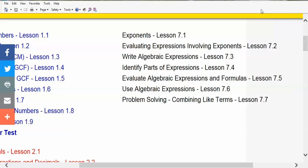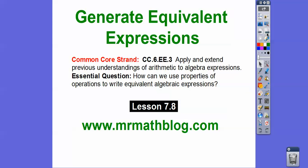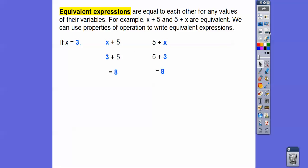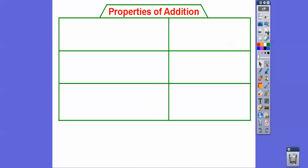Let's go ahead and get started with this lesson. Our question is: how can we use properties of operation to write equivalent algebraic expressions? Equivalent expressions are equal to each other for any values of their variables. For example, x plus five and five plus x are equivalent. If we plug in x equals three, three plus five equals eight and five plus three also equals eight. So x plus five equals five plus x — these two expressions are equivalent and give us equal statements.